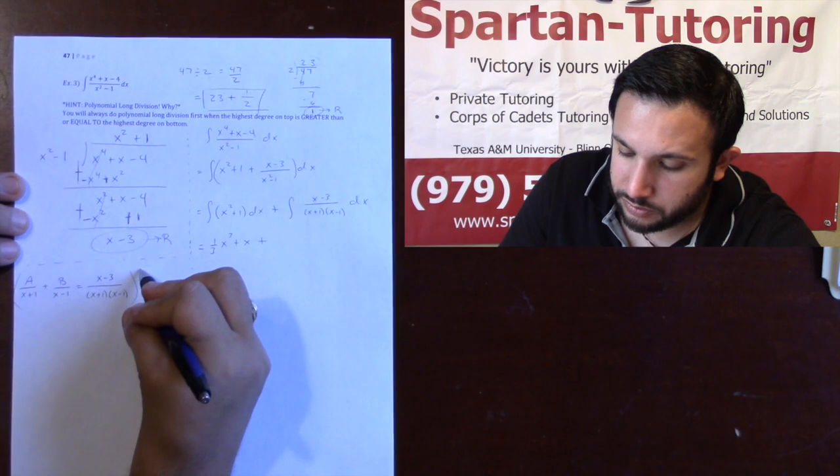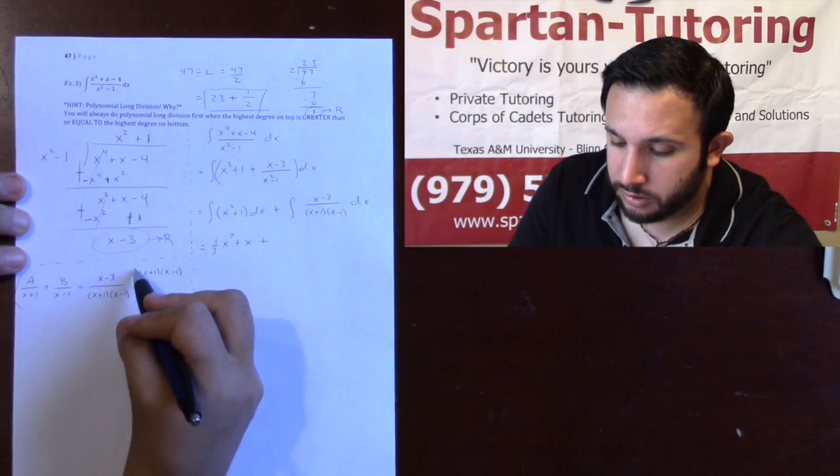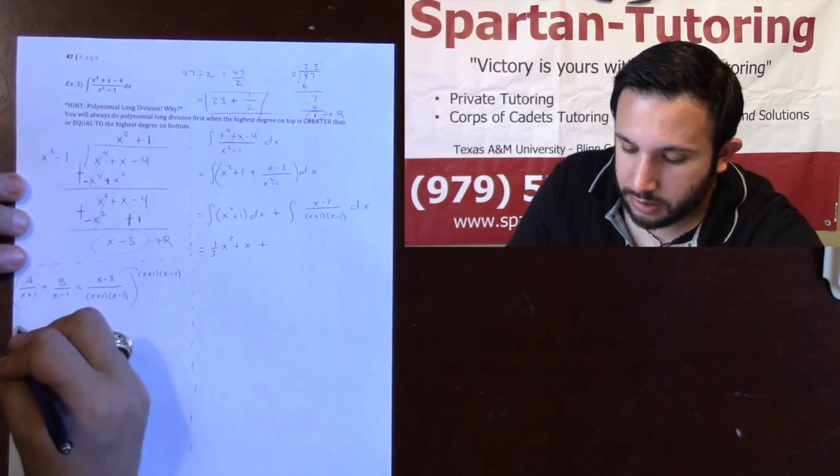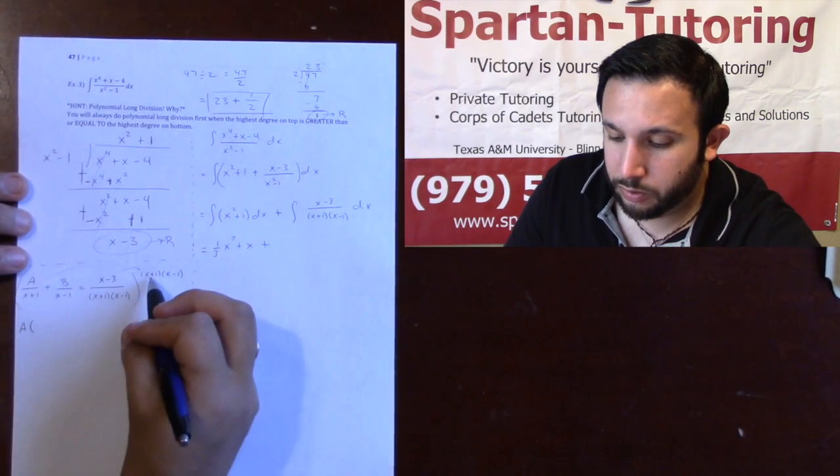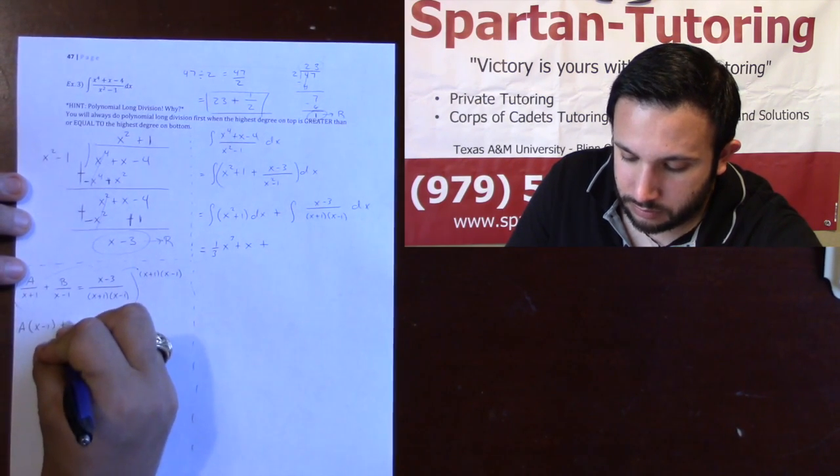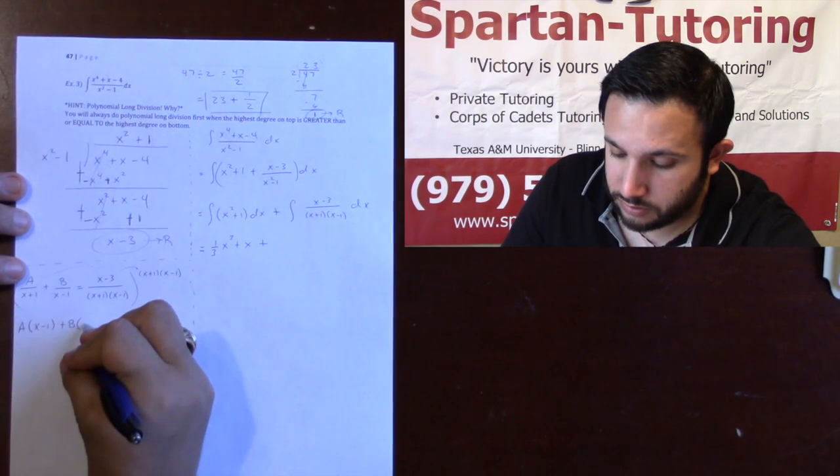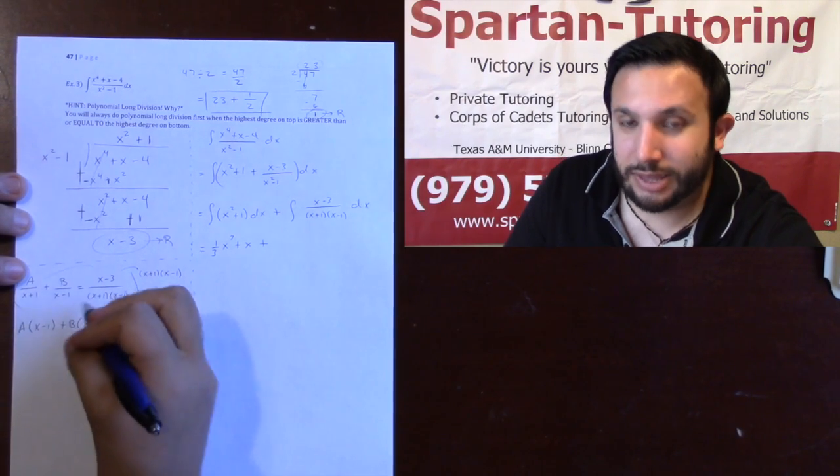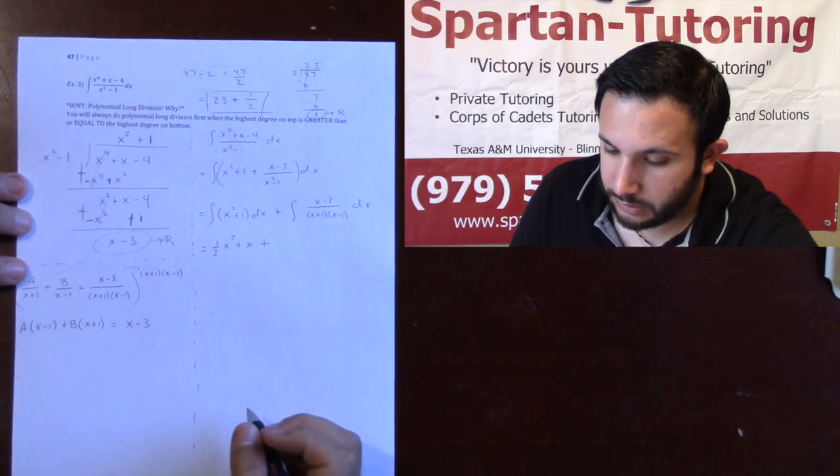So what I'm going to do is multiply both sides by the original denominator, x plus 1 times x minus 1, and distribute that into each fraction. So with the a, notice that on bottom this x plus 1 would cancel the x plus 1, so all I'd be left with is x minus 1. For the b, the x minus 1's cancel, so I'm just going to be left with an x plus 1. And then when I multiply it here on the right side, the entire denominator cancels, so it's just x minus 3.